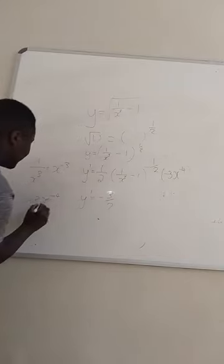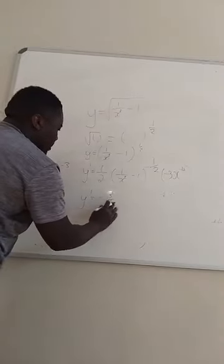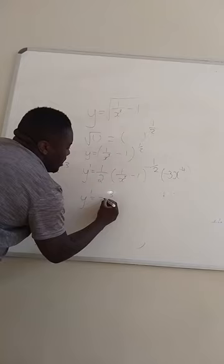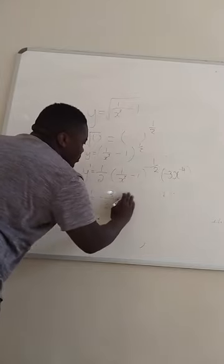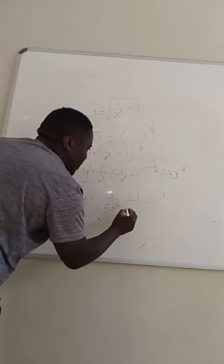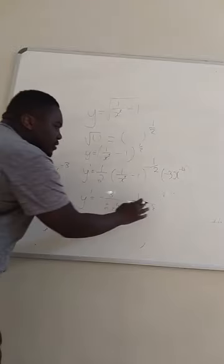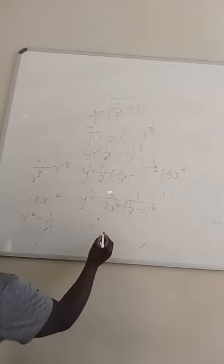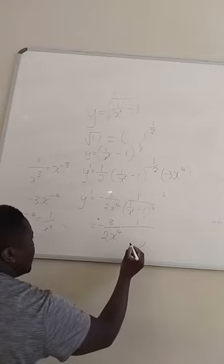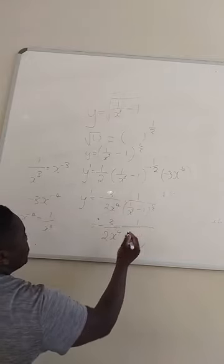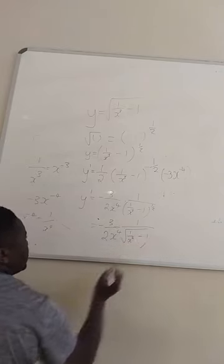Grouping the result, y prime equals negative 3 over 2 times x to the power negative 4 times (1/x cubed minus 1) to the power negative one-half. Since x to the negative four is 1 over x to the power 4, and raising to negative one-half means one over the square root, we can write the final answer as negative 3 over (2x⁴ times the square root of (1/x cubed minus 1)).